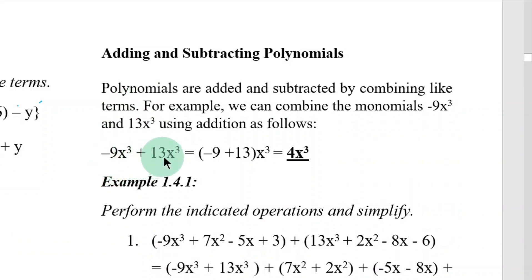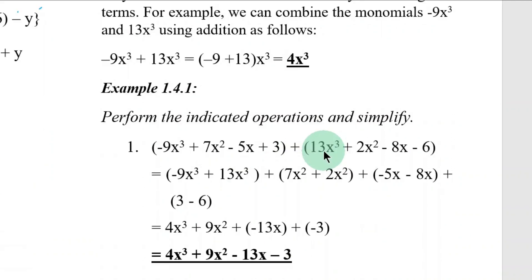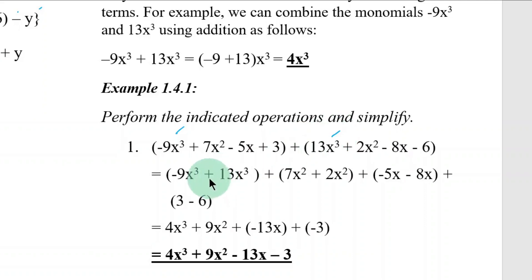So for the example, negative 9x cubed plus 13x cubed — just add the coefficients, negative 9 and 13, so the result is 4. Then x cubed. For the next example, perform the indicated operations and simplify. Combining like terms: 9x cubed and 13x cubed go together.